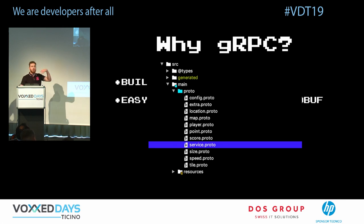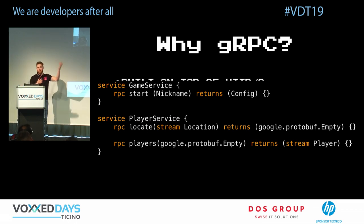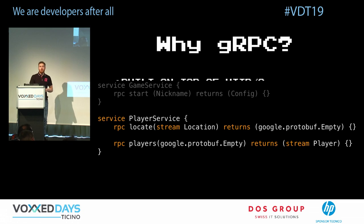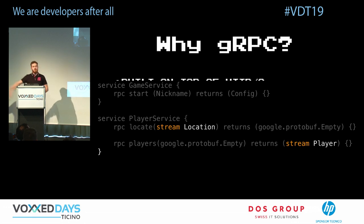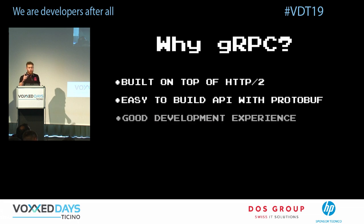gRPC is also built on top of Protocol Buffers, which means you define your API using a .proto file. All you have to do to define your communication pattern is write an RPC in protobuf. You can say this is a request-response method, or this is a client-streaming API or server streaming, defining communication patterns at the API level.